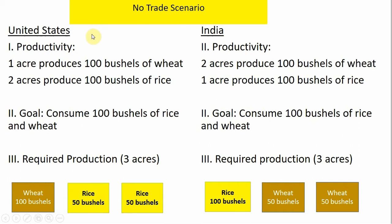We're going to start with a no-trade scenario. We have two countries, the United States and India. The productivity for growing a couple of crops in the United States is as follows: it takes one acre of land to produce 100 bushels of wheat in the U.S., and it takes two acres of land to produce 100 bushels of rice in the U.S. As for India, it's the reverse — it takes two acres of land to produce 100 bushels of wheat, but only one acre to produce 100 bushels of rice. We're going to assume the desired level of consumption is 100 bushels of rice and wheat in each country.